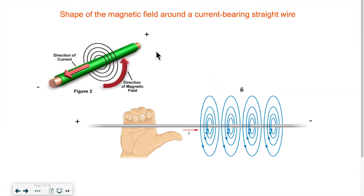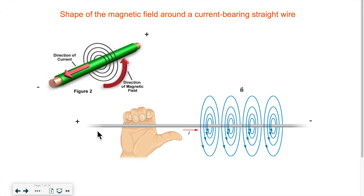If we look at the first image, we know that current goes from positive to negative — current being represented by the letter I. So electric current flows in this direction from positive to negative. When this happens you have a magnetic field that forms around the wire in the shape of a ring. You actually have several rings that get created because the field is not just around the wire but it extends a little bit. The further away you get from the wire the less of a force there is. Think of a bunch of donuts lining up around the wire.